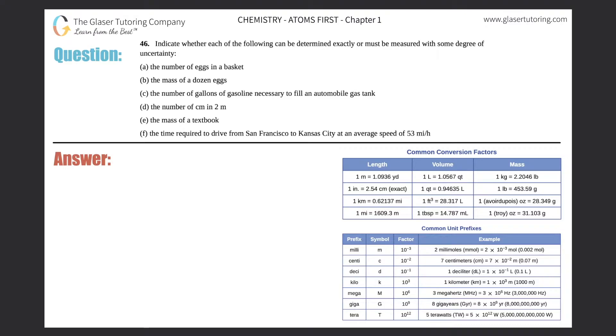Number 46. Indicate whether each of the following can be determined exactly or must be determined with some degree of uncertainty. I see that we have A through F.